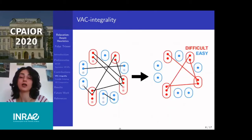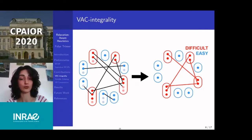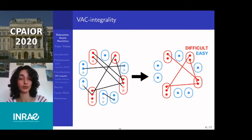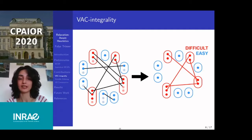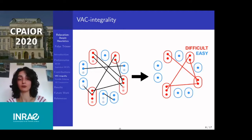To use the VAC algorithm more efficiently: if in the AC closure every variable has a unique value, we have a complete solution with a total cost equal to the lower bound — we are at optimality. Otherwise, if only a subset of variables have a unique value in the AC closure, we have a partial assignment of cost zero. Such variables correspond to integral variables in the LP relaxation when the VAC lower bound equals the optimal LP relaxation value. This is why we call them the WAC integral variables.